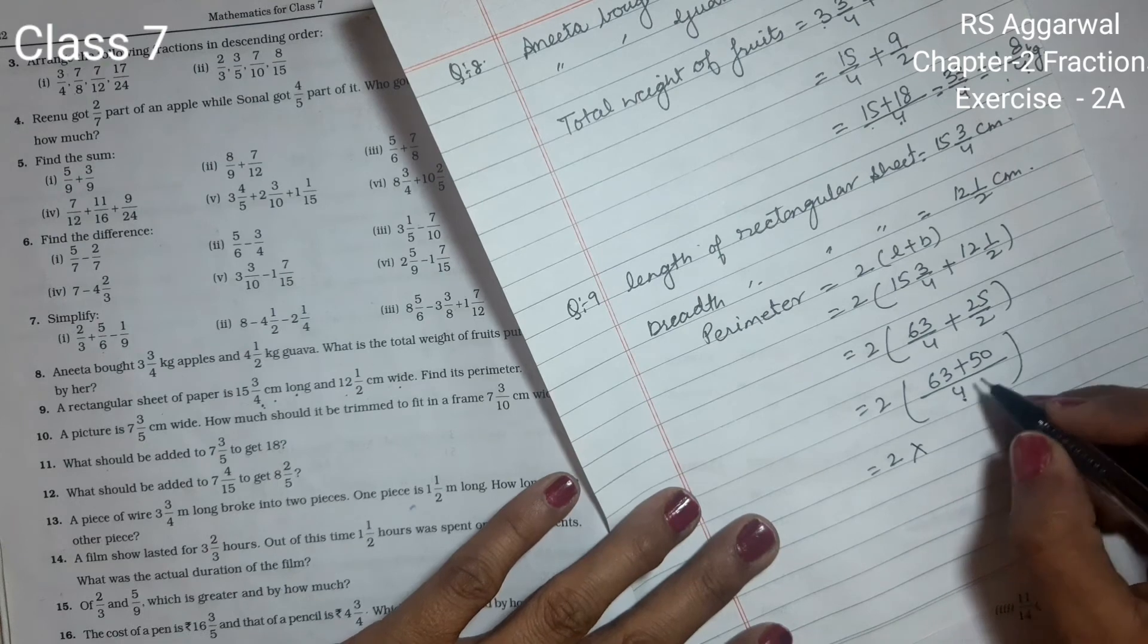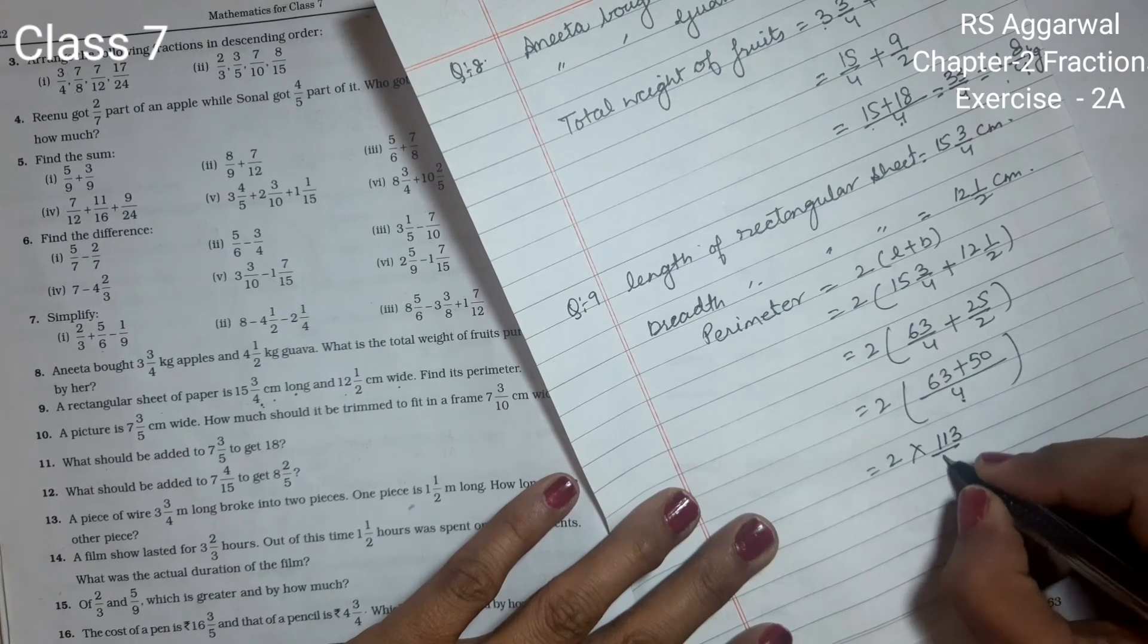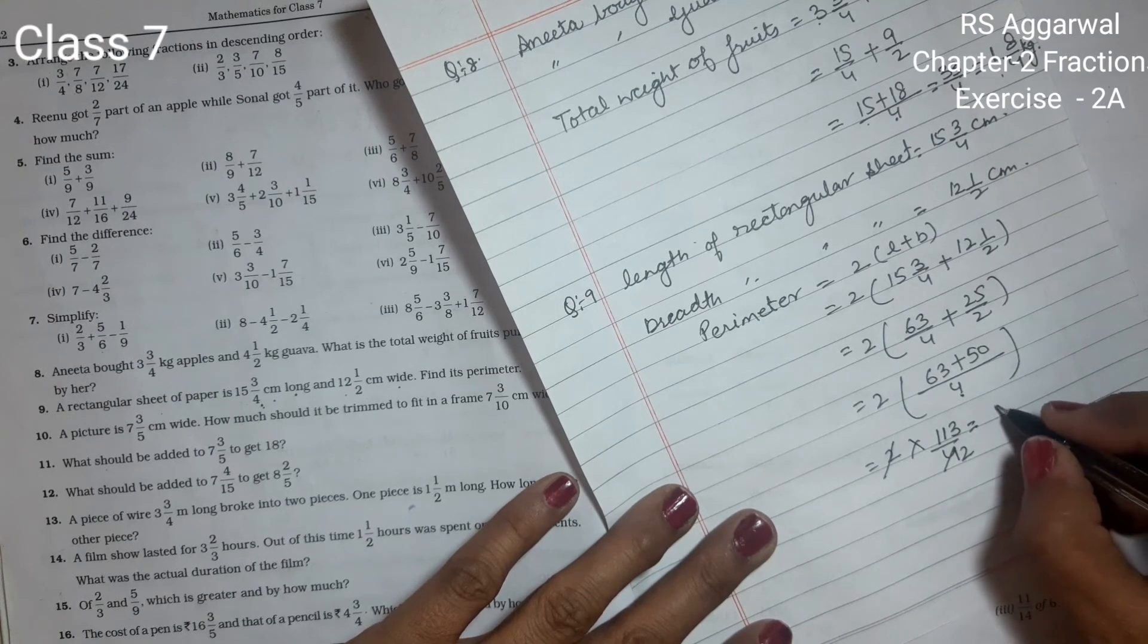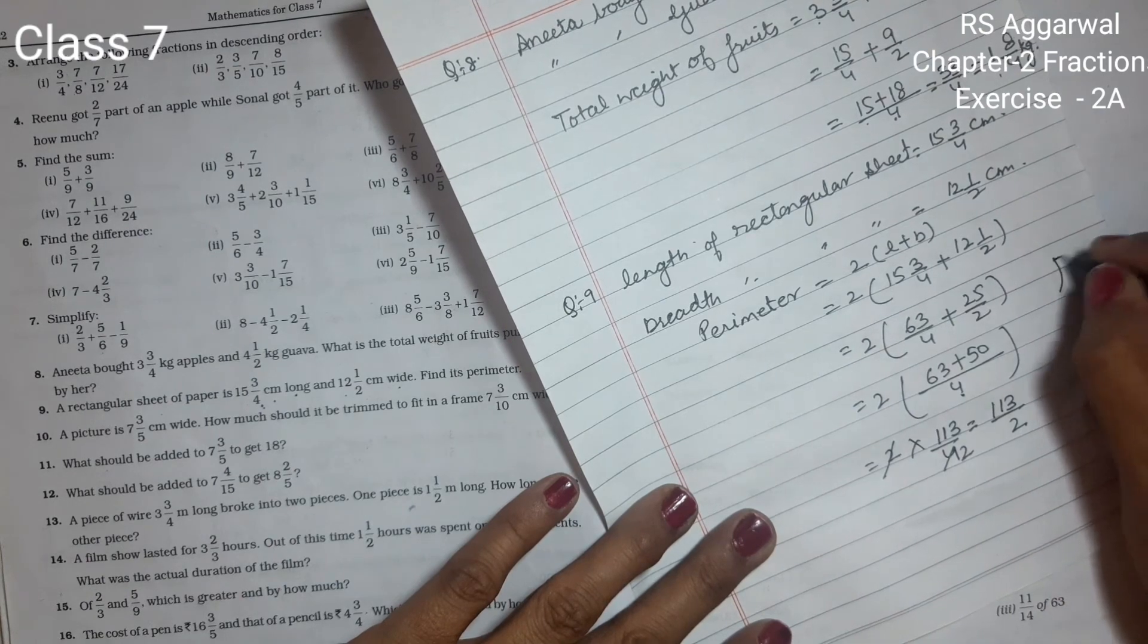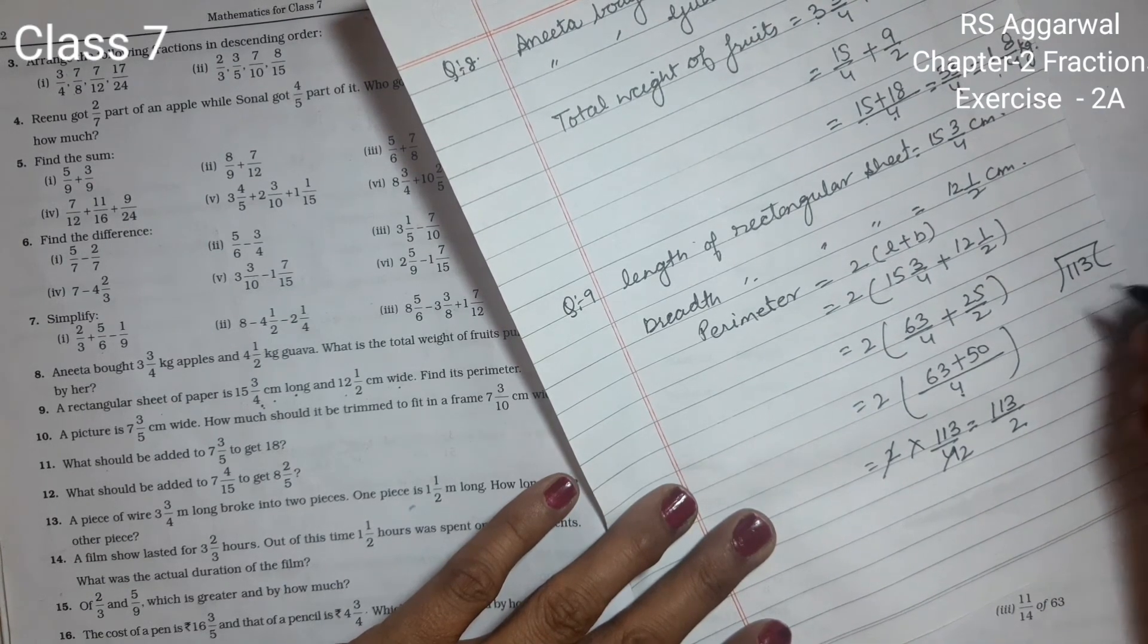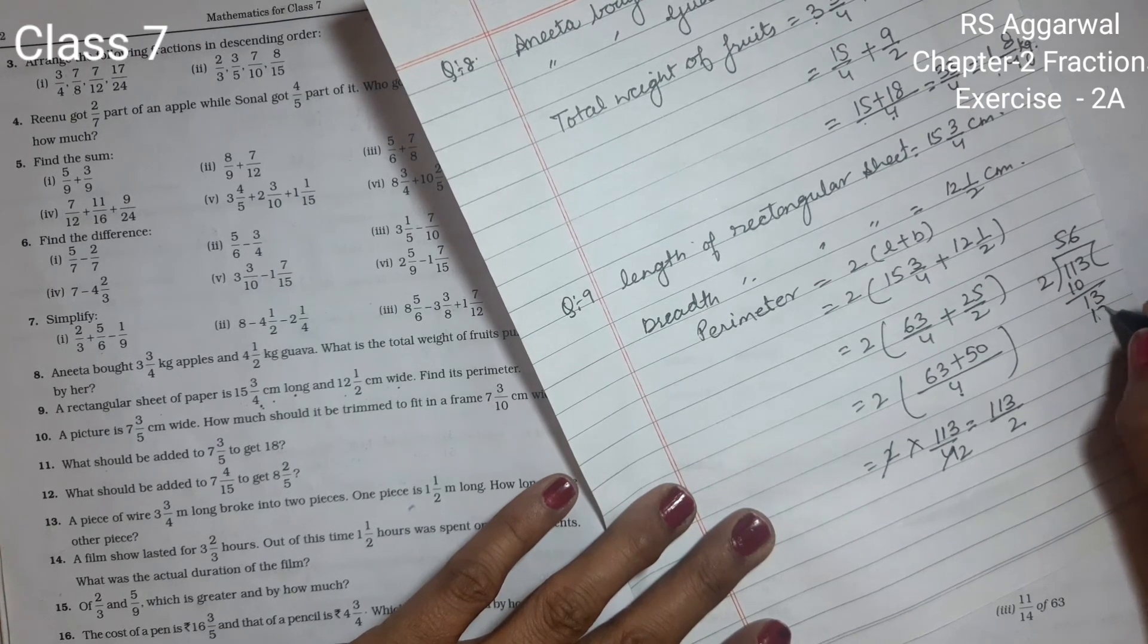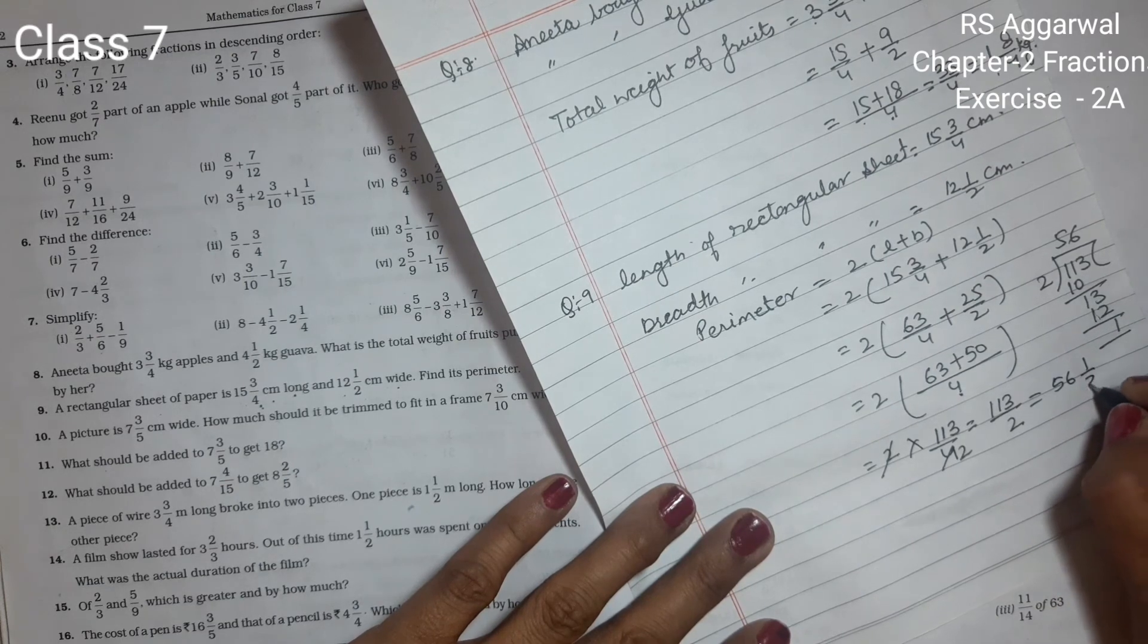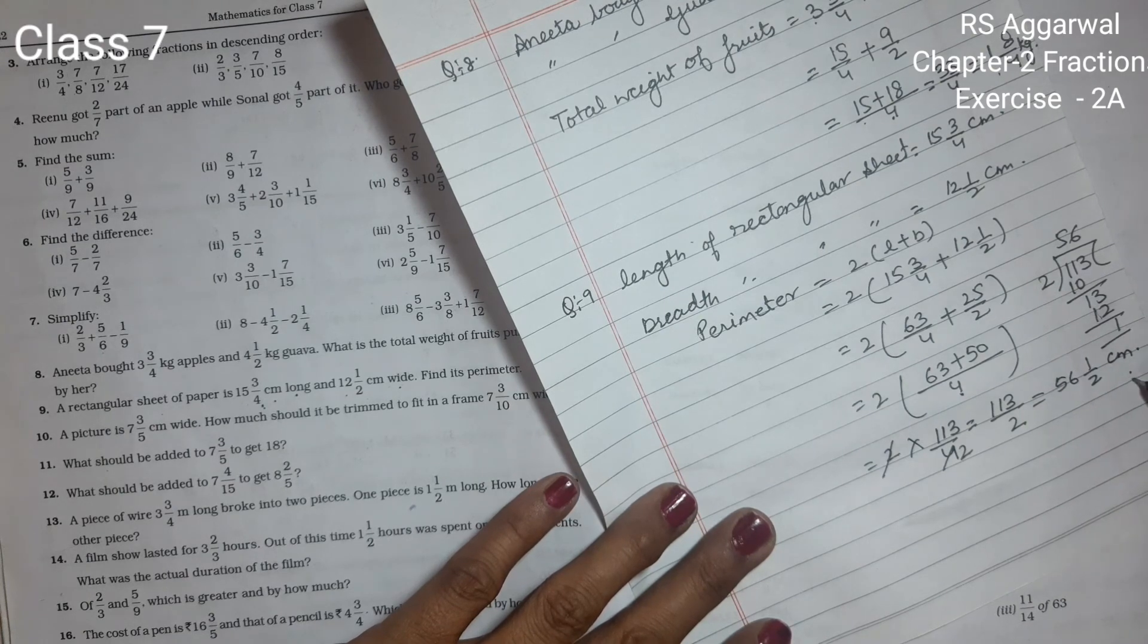Multiply by 2: 2×113 upon 4 equals 113 upon 2. Now we will divide this fraction: 113 divided by 2 is 56 with remainder 1. The perimeter is 56 whole 1 upon 2 cm.